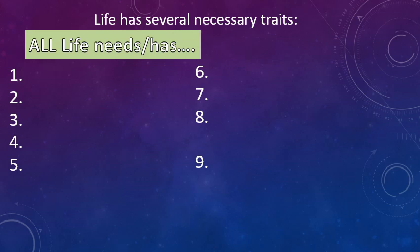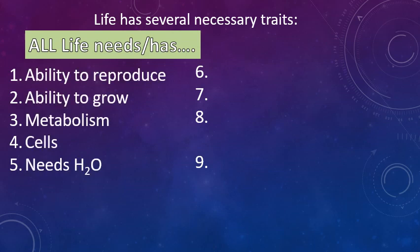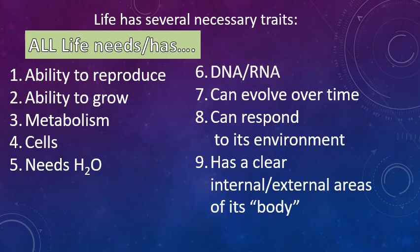Here are the first five: the ability to reproduce, the ability to grow, having a metabolism, having cells, and needing water. Some more advanced ones: all life has either DNA or RNA, all life can evolve over time, all life can respond to its environment — that is, changes in its environment — and all life has a clear internal and external area of its body, whatever you consider that body to be for the organism.